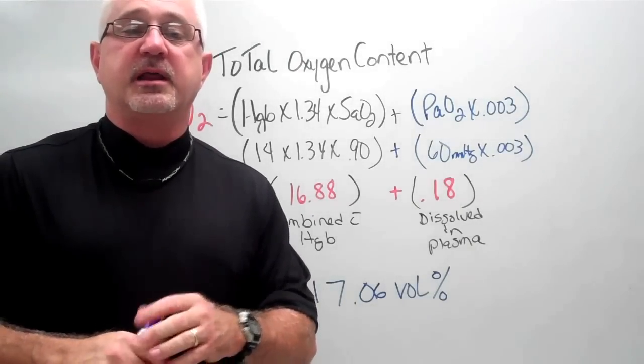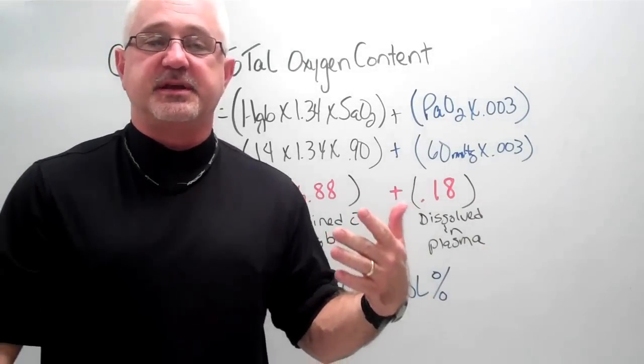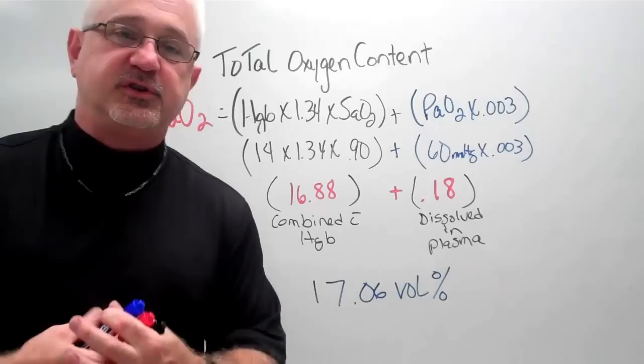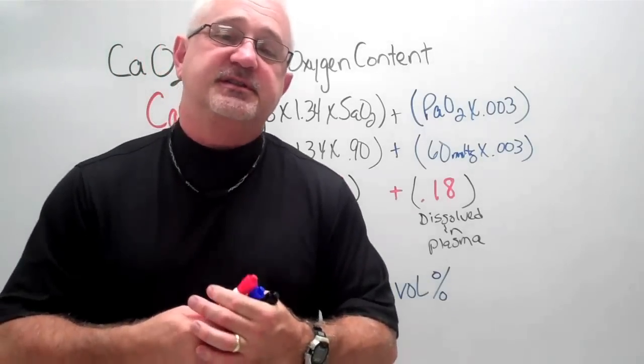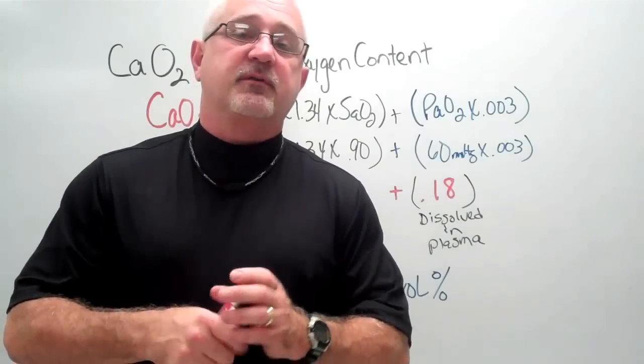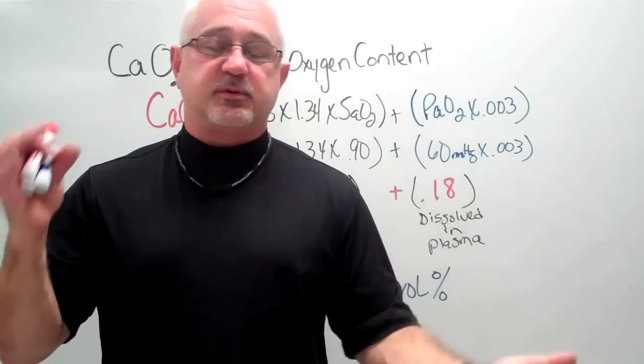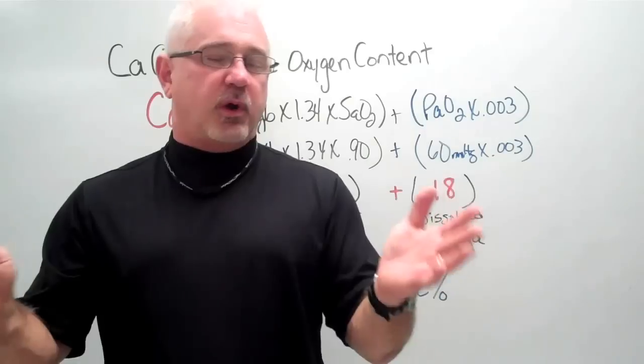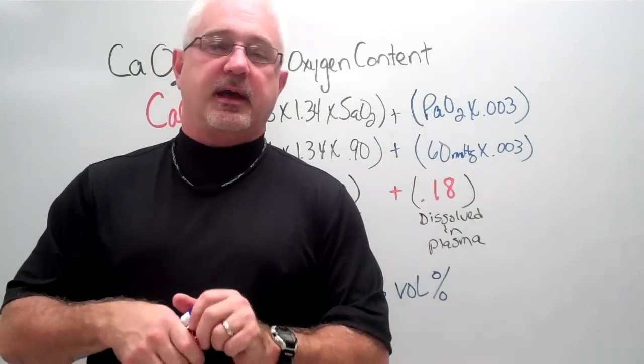Normal CaO2 is going to run anywhere between 15 to 20 vols percent depending on what resources you use. Some resources are going to tell you 16 to 20, 17 to 20 vols percent. But you're very safe to actually say between 17 to 20 vols percent. It's actually not 20, it's about like 19.9.